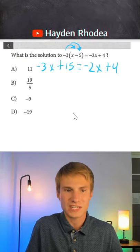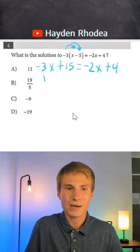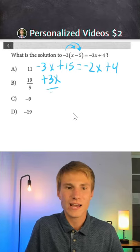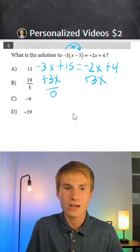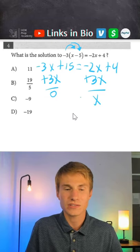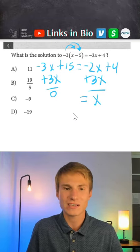Now from here, this is where the tip comes in. We want to keep x positive. So the reason here that we're going to add three x to each side is because then we are going to get x alone and it's also going to stay positive, and you always want to keep x positive if you can.